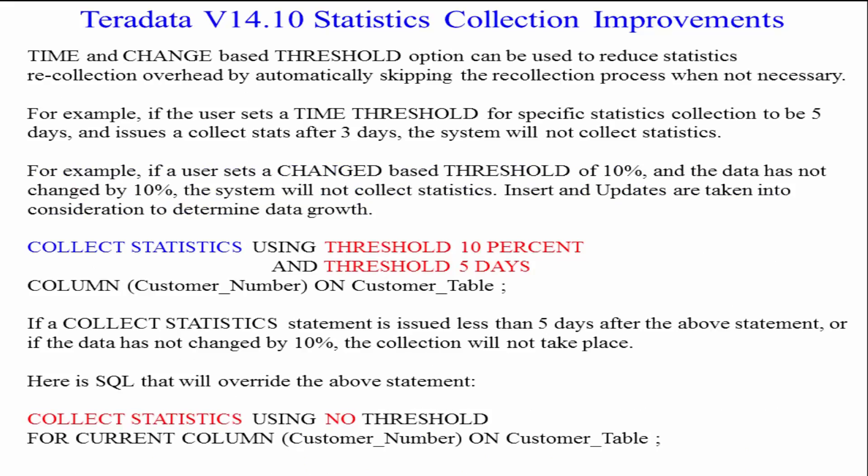V14.10 statistics collection threshold examples. Time and change based threshold options can be used to reduce statistics recollection overhead by automatically skipping the recollection process when it is determined it's just not necessary.